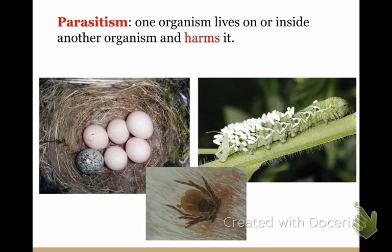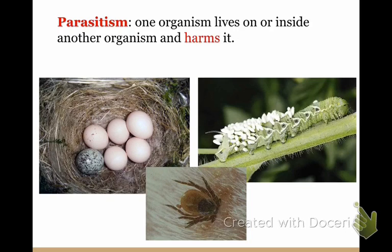Parasitism is where one organism lives on or inside another organism and harms it. Some birds lay their eggs in another bird's nest — the parasitic egg hatches first and then eats all the other eggs. Those eggs on the caterpillar are living on and feeding on it, which is pretty nasty. And a tick — if you get a tick on you, it feeds on your blood.